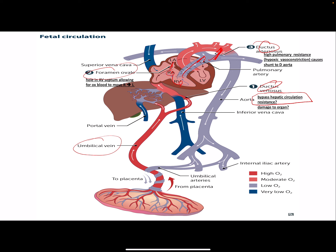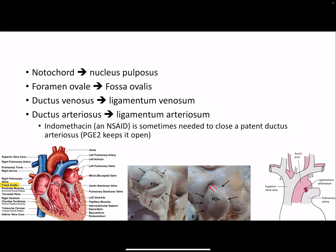All of these structures should close as someone is born over the first days, months, or years of life. When they don't, a pathology develops. The notochord becomes the nucleus pulposus, the foramen ovale becomes the fossa ovalis in the right atrium, the ductus venosus becomes the ligamentum venosum, and the ductus arteriosus becomes the ligamentum arteriosum. Indomethacin, an NSAID, is sometimes needed to close a patent ductus arteriosus.